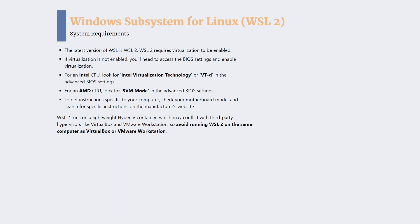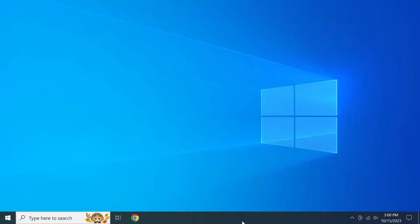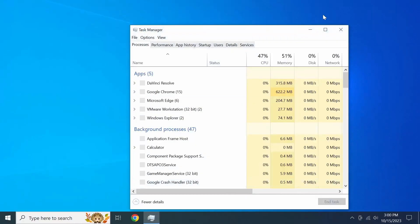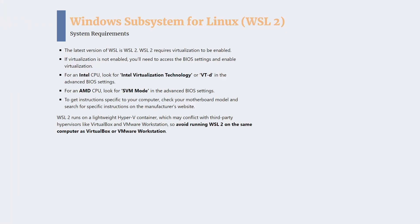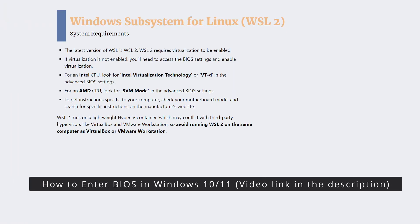The latest version of WSL, WSL 2, requires virtualization to be enabled in the BIOS. The good news is that all modern CPUs support virtualization, but it may be disabled by default. To check if virtualization is enabled on your computer, simply open Task Manager and head over to the Performance tab. There, under the CPU Performance section, you'll find the virtualization status. If it says enabled, you're good to go with WSL installation. If not, you'll need to access the BIOS settings and enable virtualization.